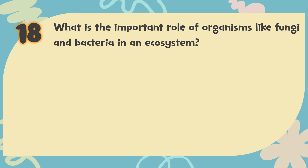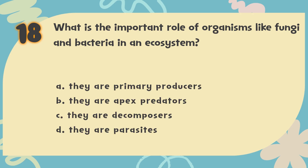Number 18. What is the important role of organisms like fungi and bacteria in an ecosystem? The choices are: A. They are primary producers. B. They are apex predators. C. They are decomposers. D. They are parasites.